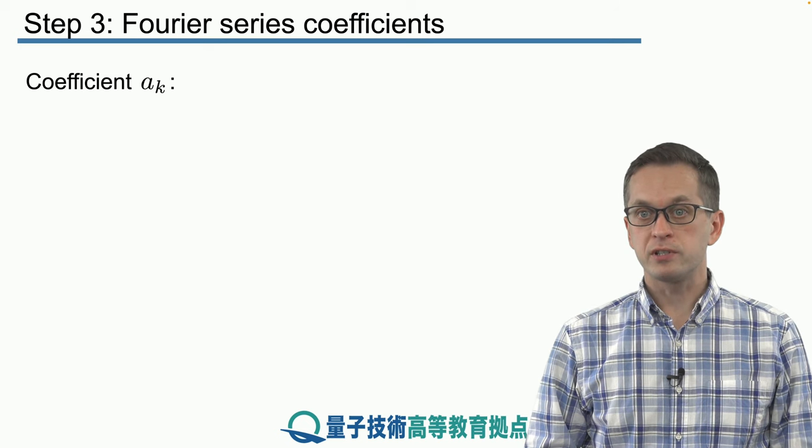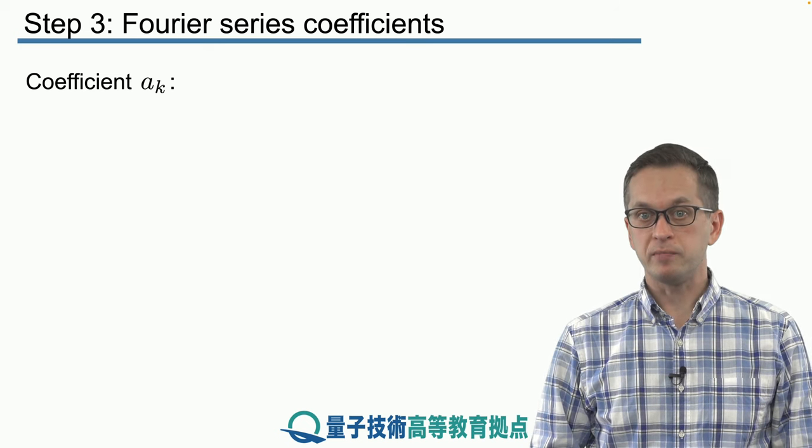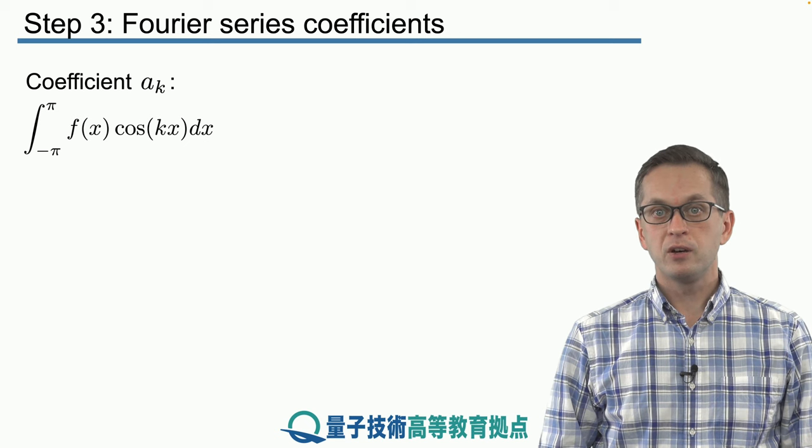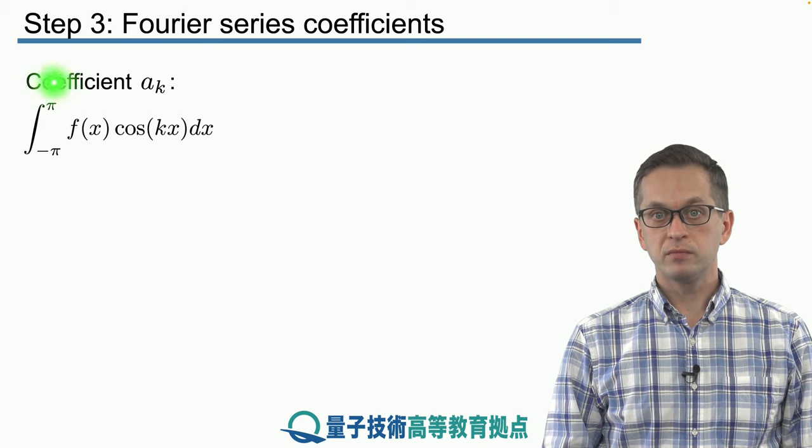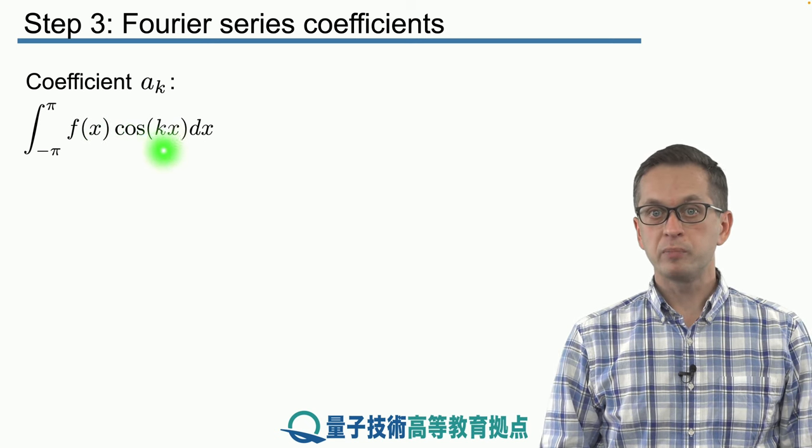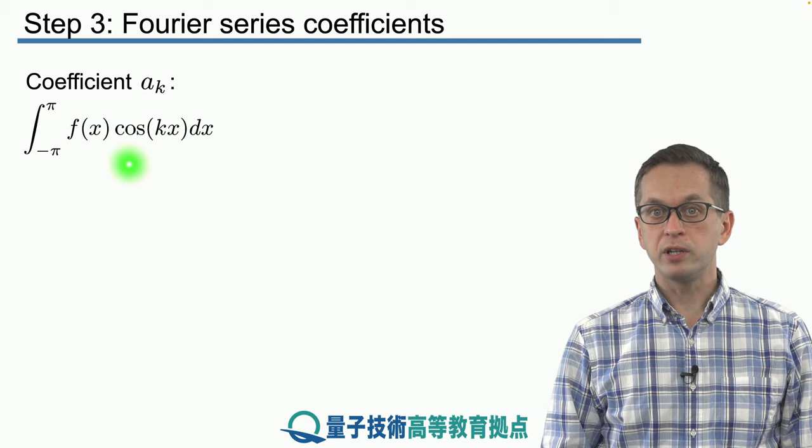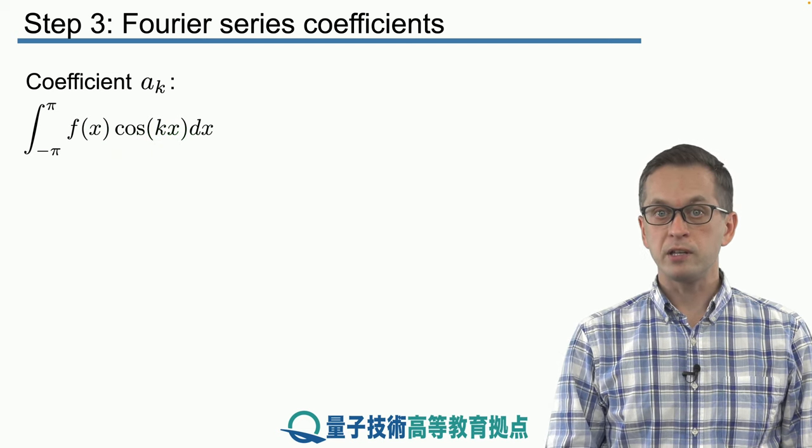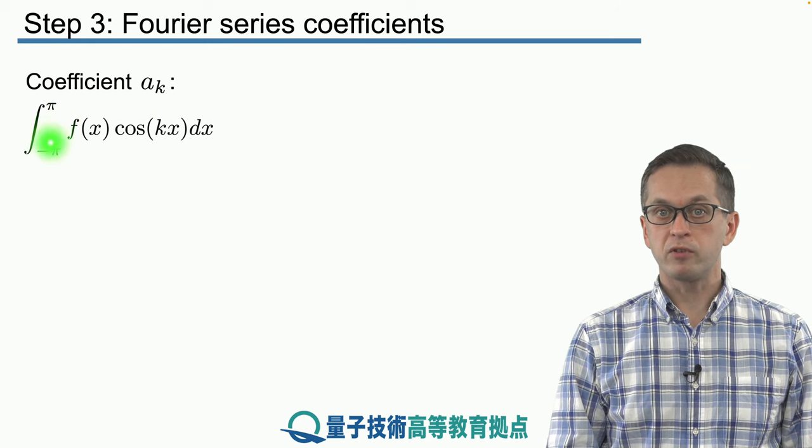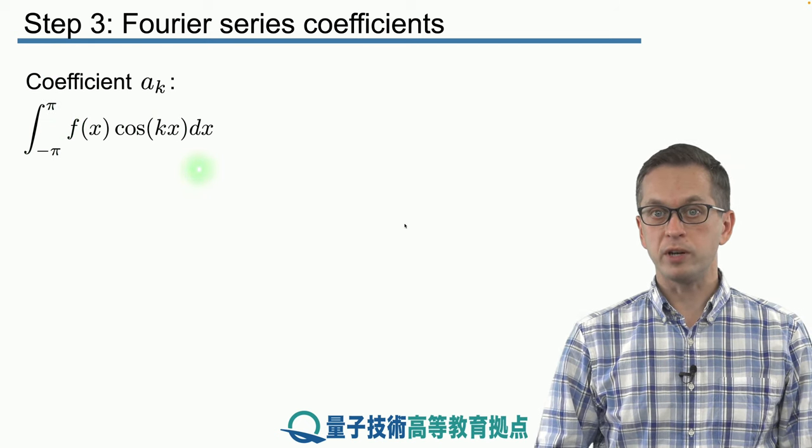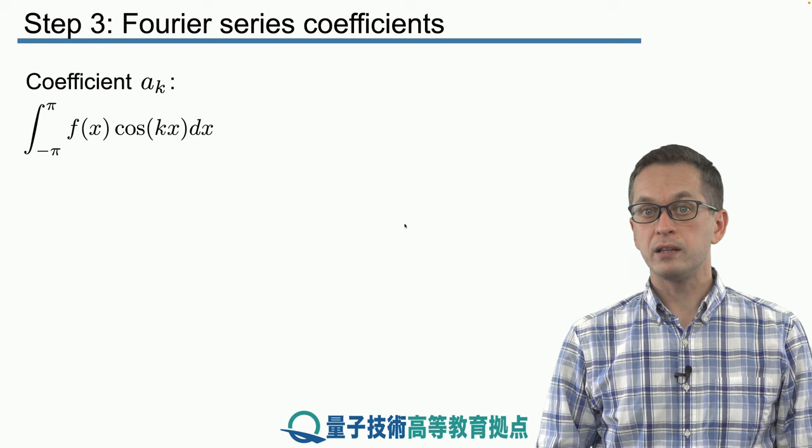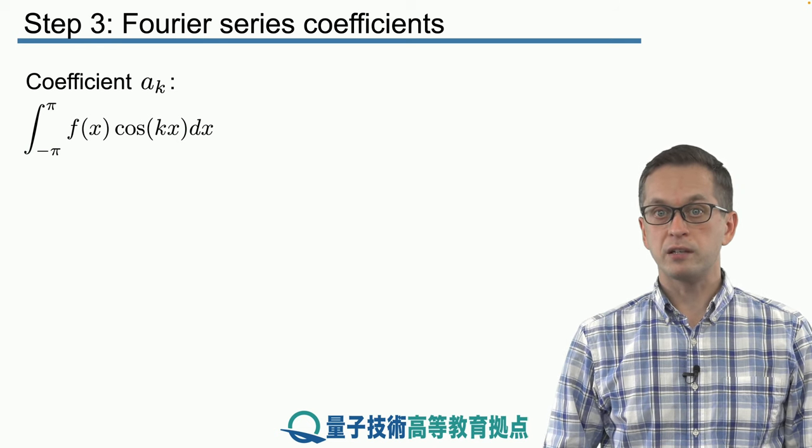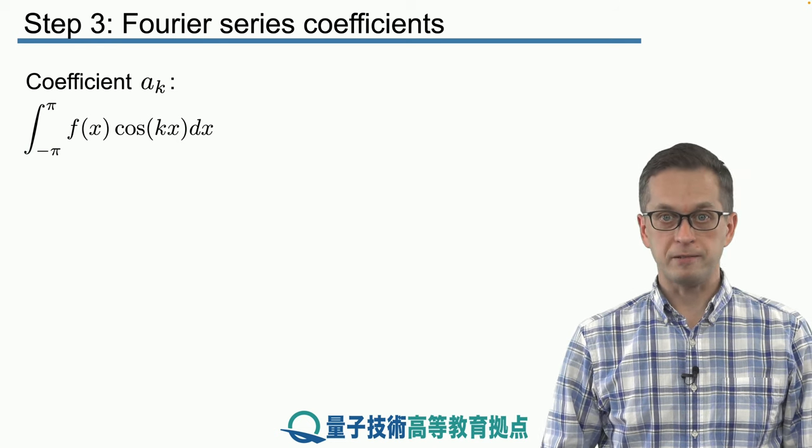Let's consider coefficients a_k. How can we find them? In order to do that, we have to take our function f(x) and multiply it by the basis harmonic cosine of kx and integrate over the whole period from minus pi to pi with respect to x. So really we're only taking the inner product between f(x) and cosine of k times x.